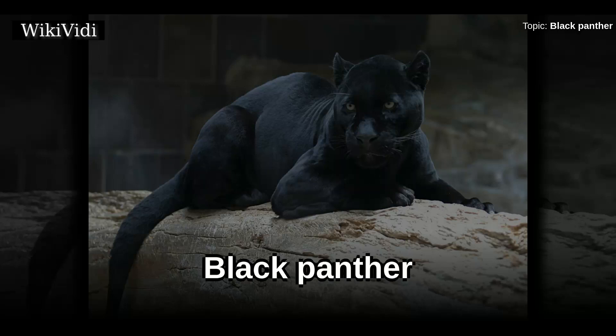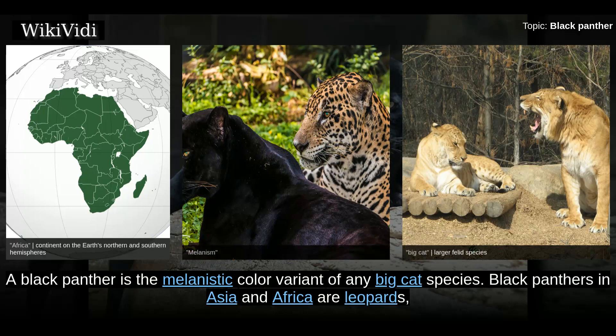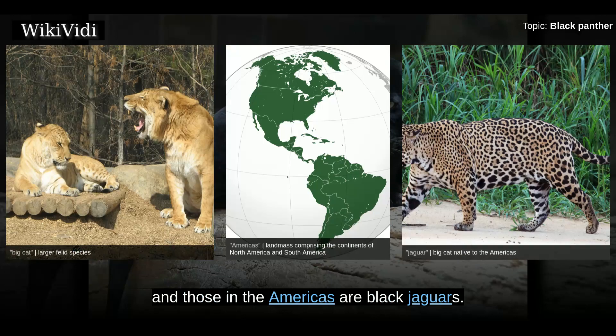Black Panther. A black panther is the melanistic color variant of any big cat species. Black panthers in Asia and Africa are leopards, and those in the Americas are black jaguars.